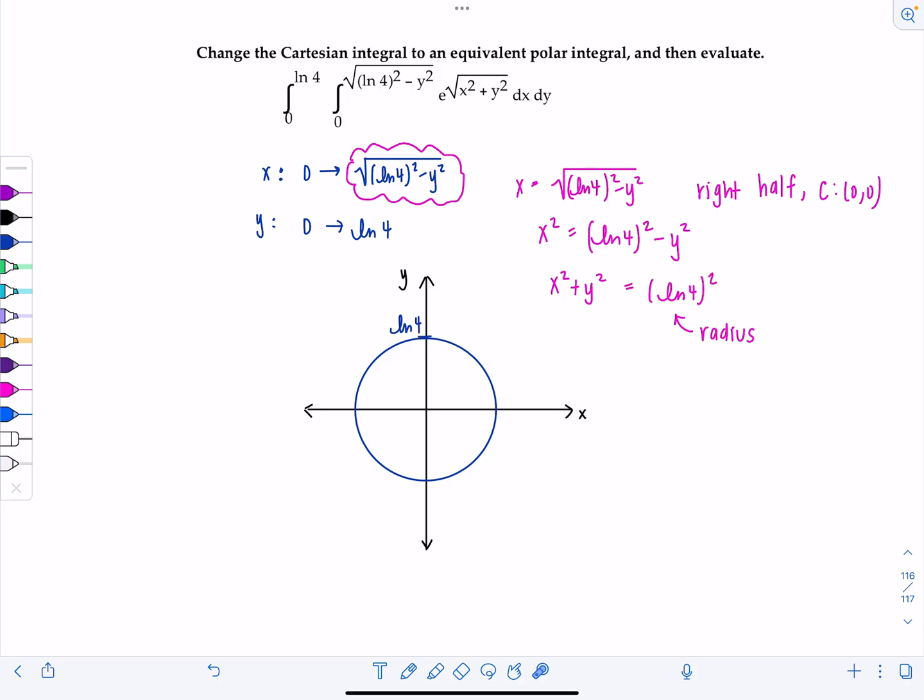This is natural log of 4. The limits for y go from 0 to natural log of 4, and then the limits for x go from 0 to this circle here. We were originally only dealing with the right half, but then the limits for y restricted here so it's just this portion. Your limits for x go from 0 to the semicircle, and then the limits for y go from 0 to natural log of 4.